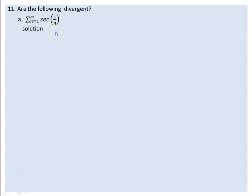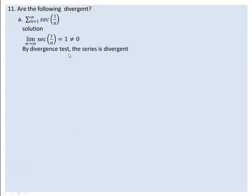This is the divergent test. This is the convergence of them. The limit of 1 over n goes to infinity. So, by the divergent test, the series is divergent.